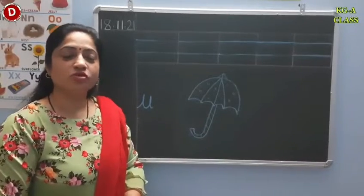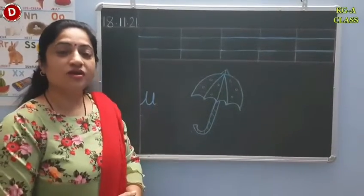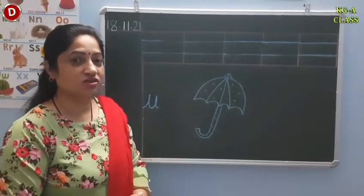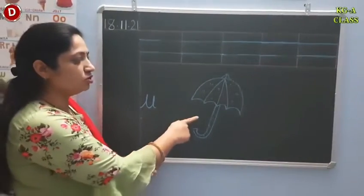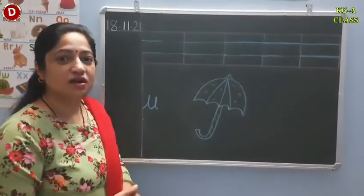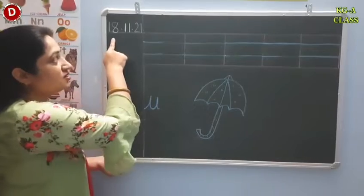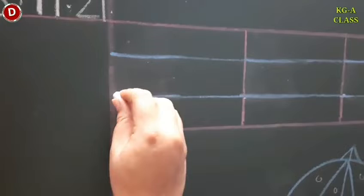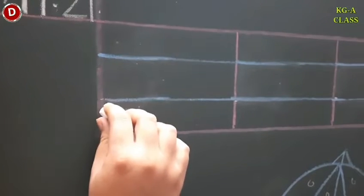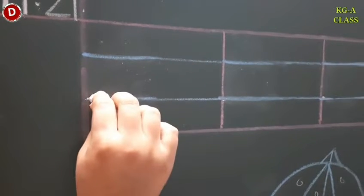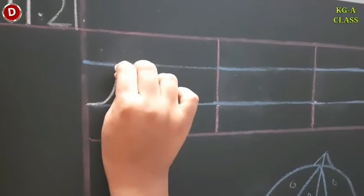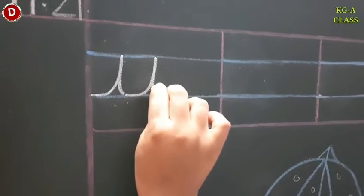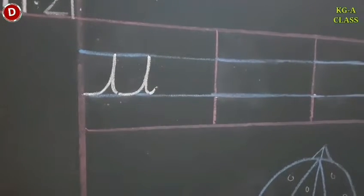Children, today again I am going to teach you to write cursive U. First I am going to write on the board, so you have to watch it carefully and then follow the way I am teaching you. This is cursive U — U for umbrella and U says U. Today's date is 18th November 2021. Children, you have to put your pencil on the second blue line and take support of this red line on your left hand side. From here you have to make a little curve, go up, come down on the same line, and touch the second blue line. Again go up, touch the first blue line and come back, and turn it a little bit. In this way you have to write.